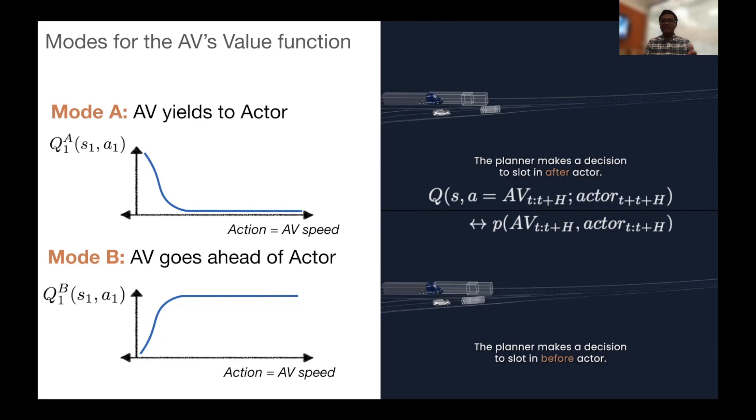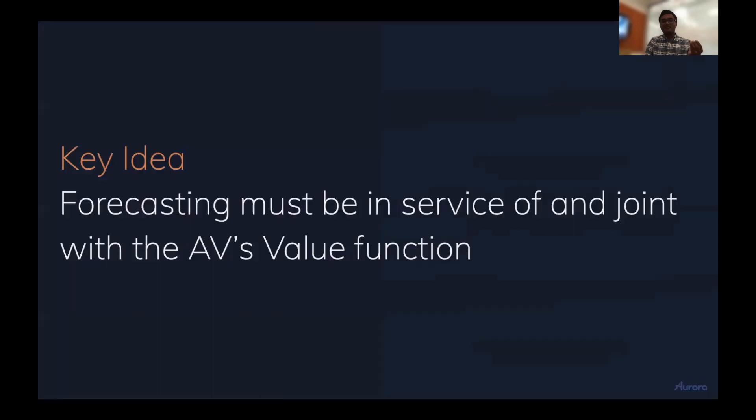And the way to unify all this is to think about in terms of the AV's value function. So this is the key idea, is that forecasting must be in service of and joint with the AV's value function. We cannot do forecasting independently as a priori step if we really need to make sure that the value that the AV does, the way it conveys intent to the world, the way it drives like a human out there, needs to be such that the forecasting system is aware of that interaction as well. And the way to do this is through the value function.